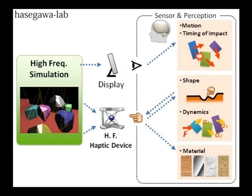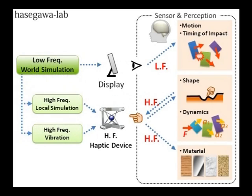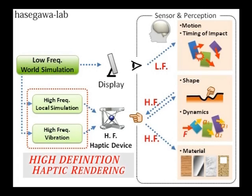High definition haptic rendering also regards human perception. Humans perceive motion of objects visually and prepare for impact force. However, the time precision of human vision is not very accurate, so low frequency simulation is enough for this impact force. On the other hand, humans perceive dynamics and shapes of objects from the relations between applied forces and motions via haptic sensors. Haptic sensors require smoothness and high frequency update, so we apply high frequency haptic rendering for this.